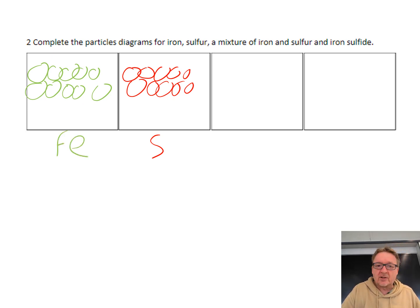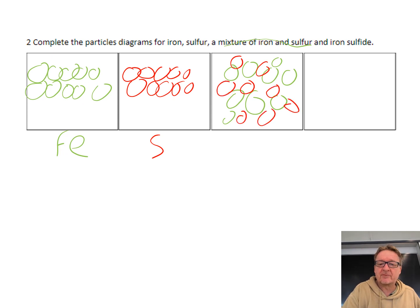If I've got a mixture of iron and sulfur, I could just do it like this, kind of random, chucking a bit of red there as well, a bit of sulfur. They're kind of random.